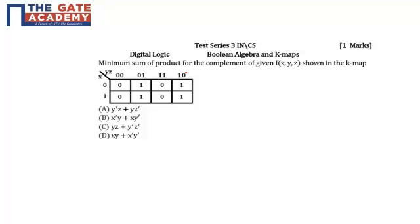The question is: the minimum sum of the product for the complement of the function given by f of x, y, z shown in the K map as shown over here is dash.